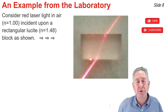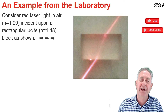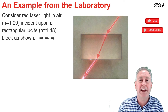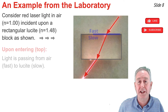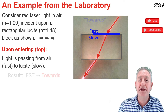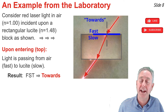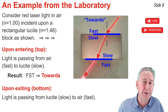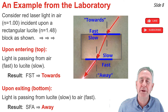Let's use what we've learned to analyze a situation you might have encountered in a physics lab: red laser light traveling through air enters into a rectangular block of lucite glass and exits out the other side. At the top boundary, light is in air and traveling towards the slower lucite — fast to slow — so the bending occurs towards the normal line, and the light ray within the glass is closer to that normal line than the light ray in air is. As the light exits the lucite glass back into the air, it's going from slow to fast, and it bends away from the normal line.